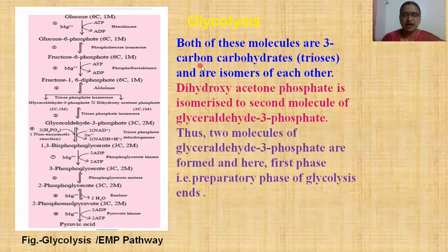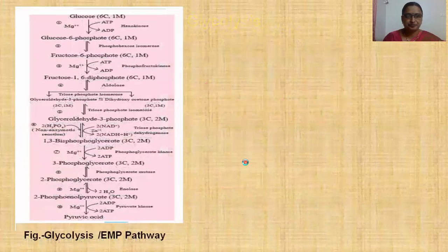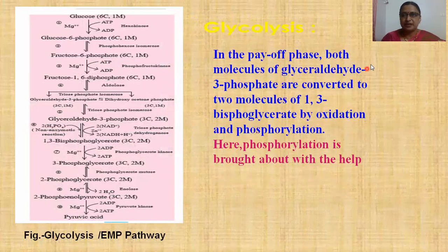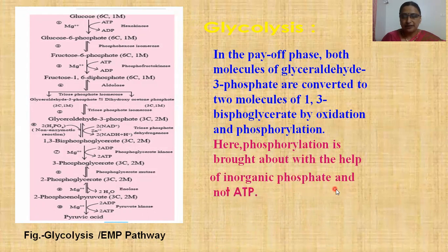Both these 3-carbon carbohydrate trioses are isomers of each other. Glyceraldehyde-3-phosphate and dihydroxyacetone phosphate are interconverted by triose phosphate isomerase to yield two molecules of glyceraldehyde-3-phosphate. This completes the first phase — the preparatory phase of glycolysis. In the payoff phase, both molecules of glyceraldehyde-3-phosphate are converted into two molecules of 1,3-bisphosphoglycerate by oxidation and phosphorylation.